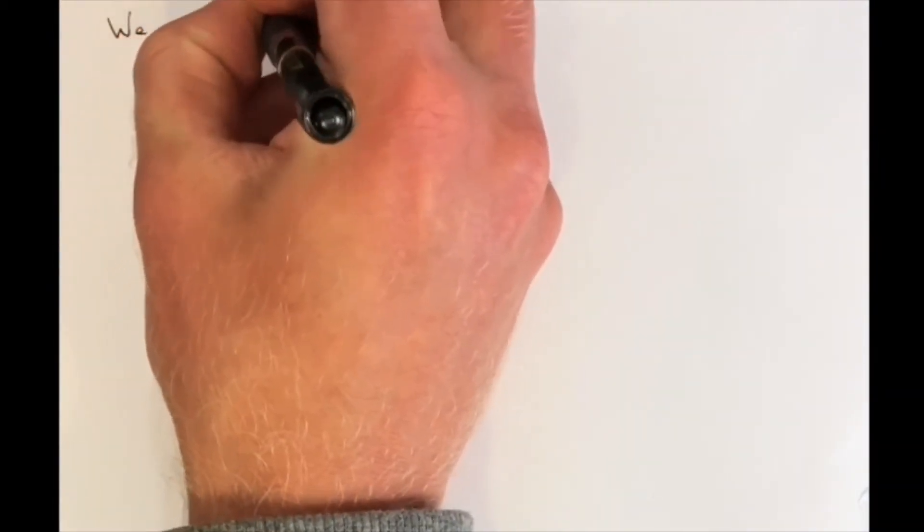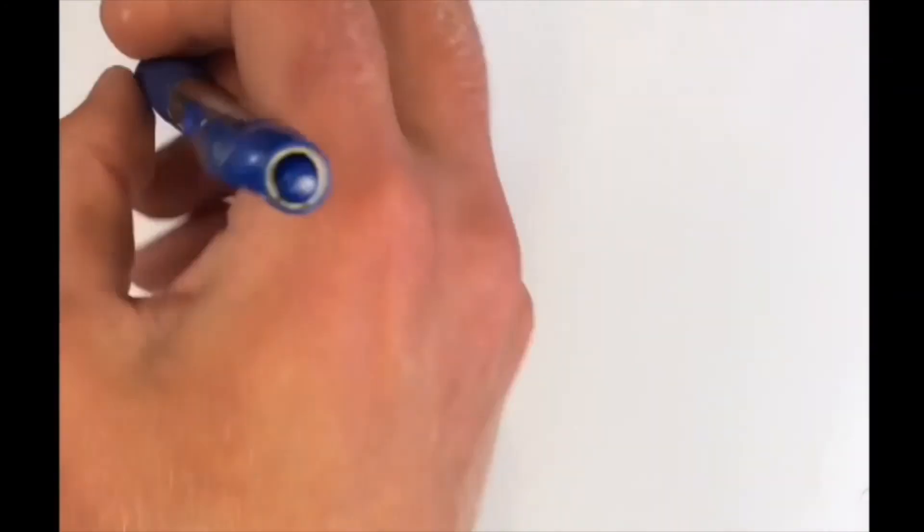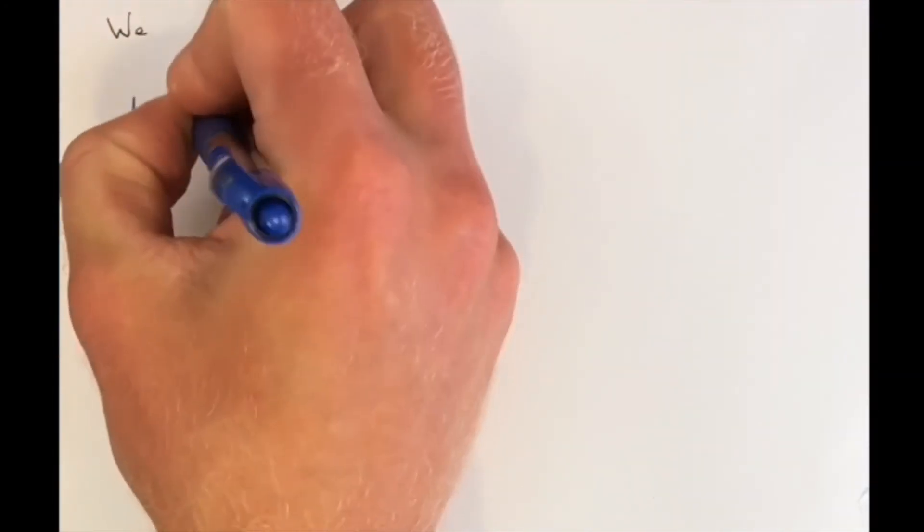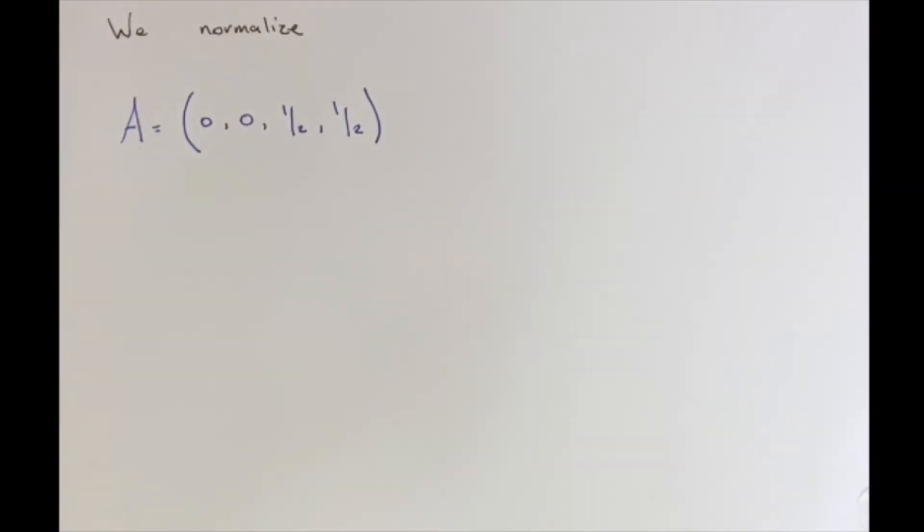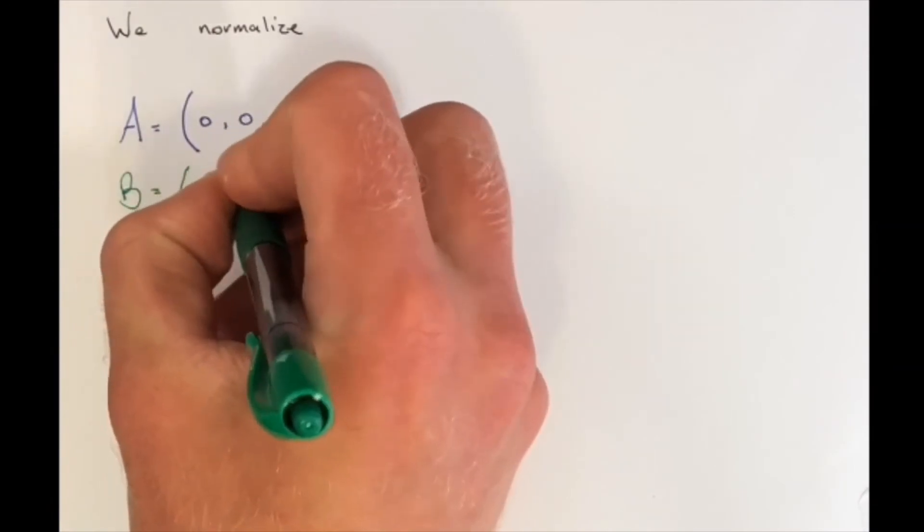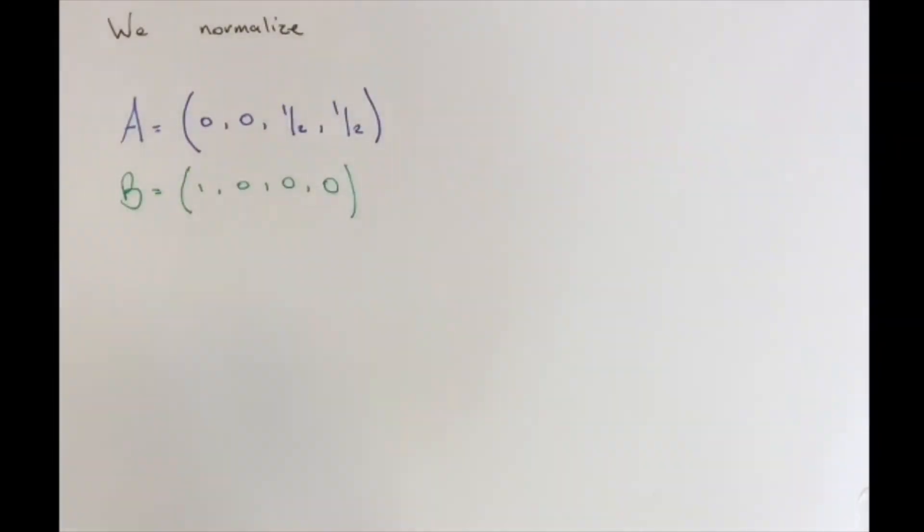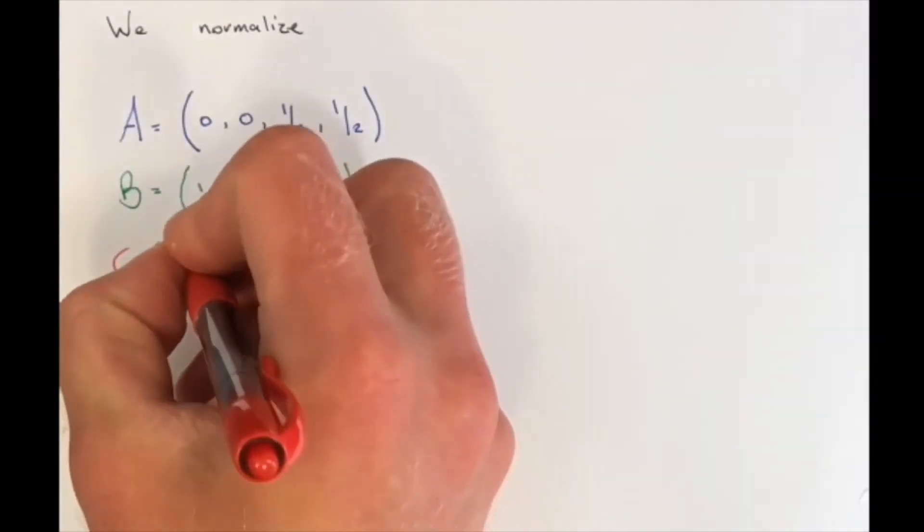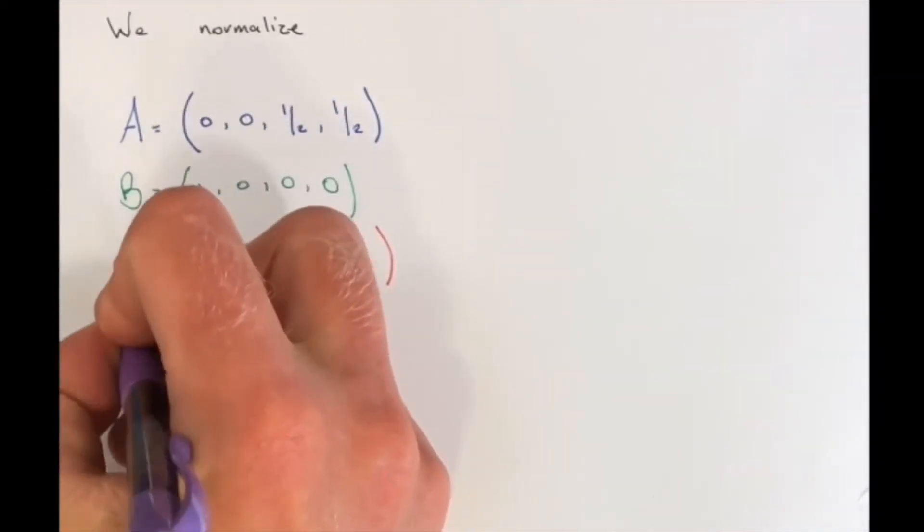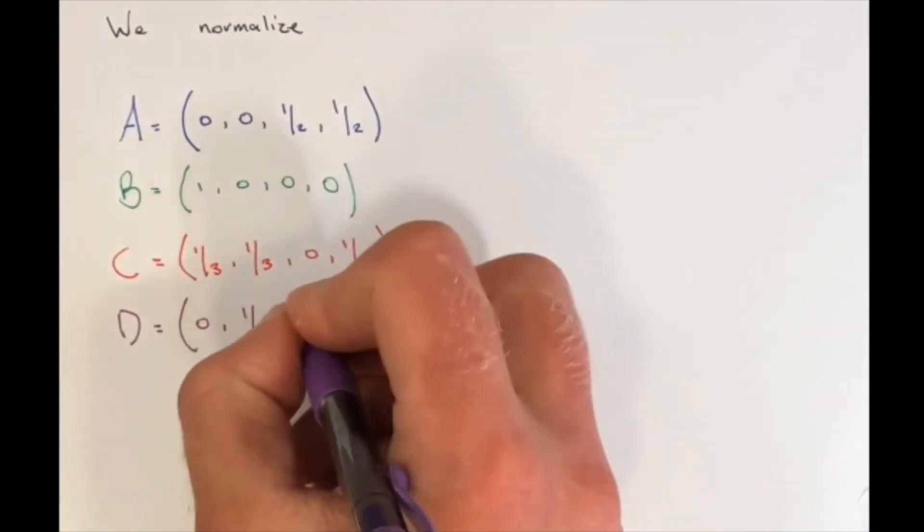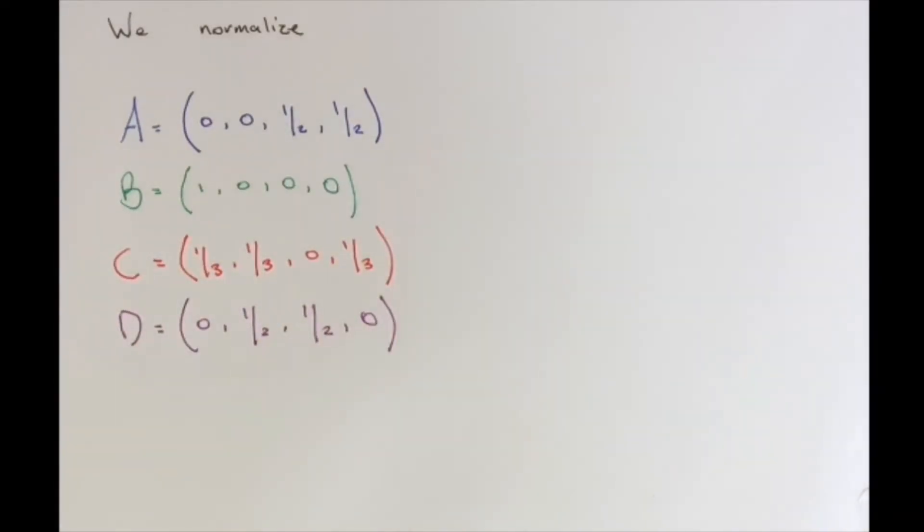Now we normalize our column vectors. We normalize A by multiplying each entry by a factor of one-half. Each entry is multiplied by a factor of one-half because there are two links. B only has one link, so each entry is multiplied by one. C has three links, so each entry is multiplied by a factor of one-third. D has two links, so each entry is multiplied by a factor of one-half.